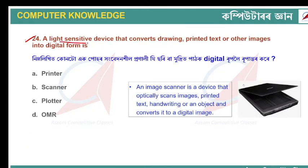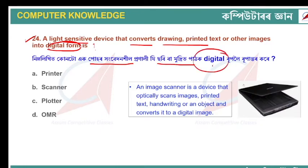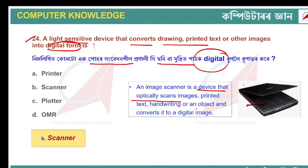A light-sensitive device that converts drawings or printed text into digital form is called a scanner. A scanner is an input device — when you place an image or printed text under it, the device optically scans it and converts it into a digital image. That device is called a scanner.